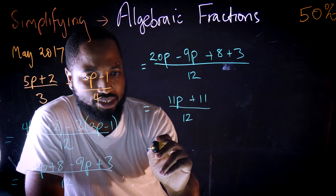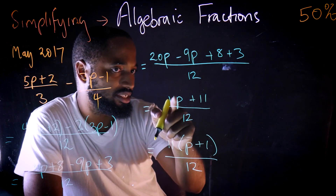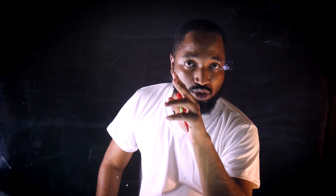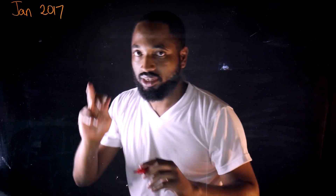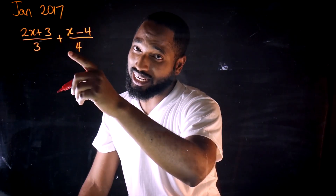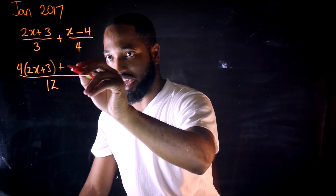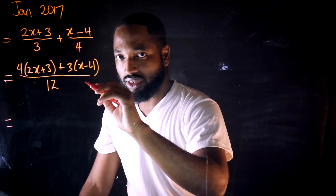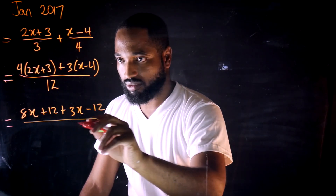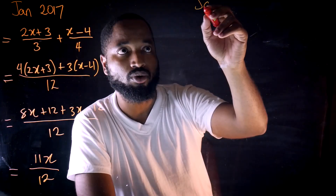A nice way to write this is 11(p + 1) over 12 — 11 times p gives 11p, and 11 times 1 gives 11. You should get full marks if you reach this step. Now let's look at January 2017: (2x + 3) over 3 plus (x minus 4) over 4. The LCM is again 12, giving us 4(2x + 3) plus 3(x minus 4), which simplifies to 8x + 12 + 3x minus 12, giving 11x over 12.